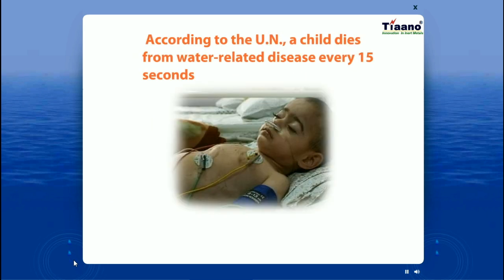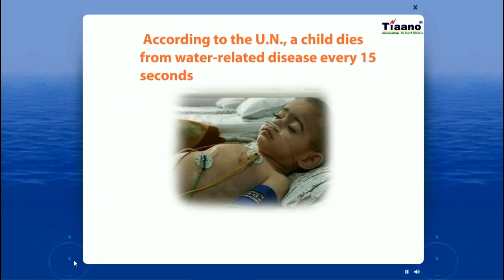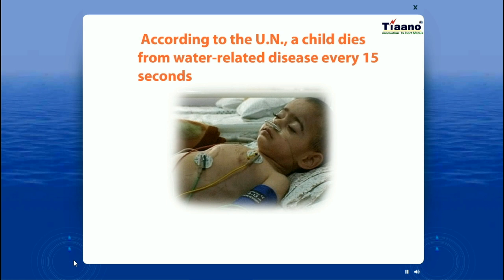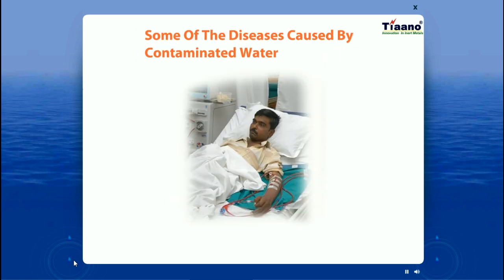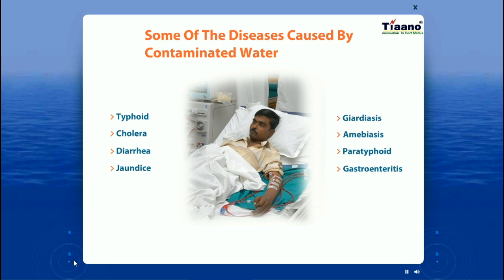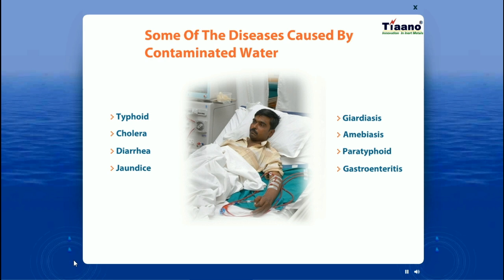According to the United Nations, a child dies from water-related diseases every 15 seconds. Diseases caused by contaminated water include typhoid, cholera, diarrhea, jaundice, filariasis, amoebiasis, paratyphoid, gastroenteritis, and many more.